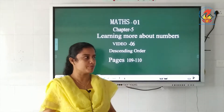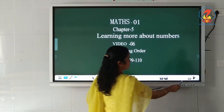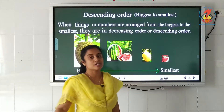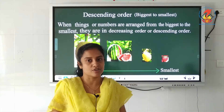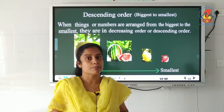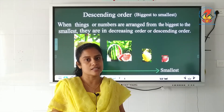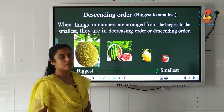Welcome children, today's topic is descending order. Descending order means biggest to smallest. In the first chapter you studied decreasing order — arranging numbers from biggest to smallest. The another name for decreasing order is descending order.